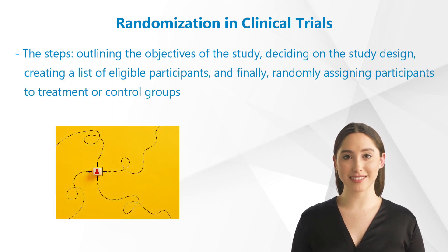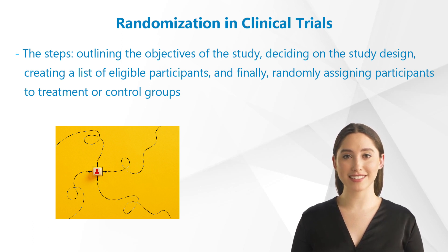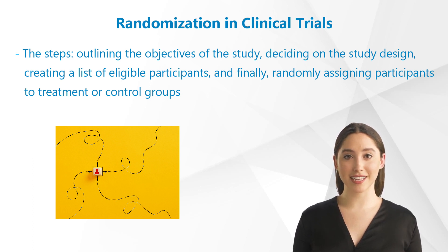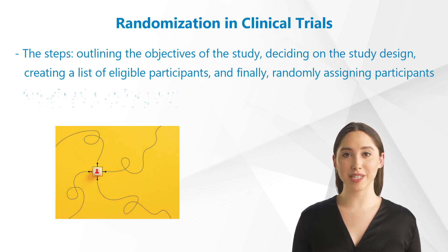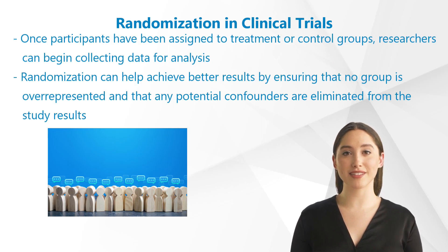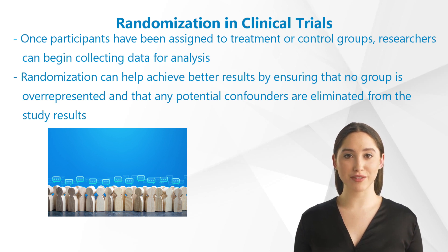The Randomization Process. Randomization is the process of assigning subjects to treatment or control groups in a clinical trial. This is done to ensure that any potential confounders or biases are removed from the study results. The steps in the randomization process include outlining the objectives of the study, deciding on the study design, creating a list of eligible participants, and randomly assigning participants to treatment or control groups. Once participants have been assigned, researchers can begin collecting data for analysis.